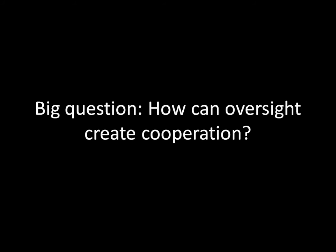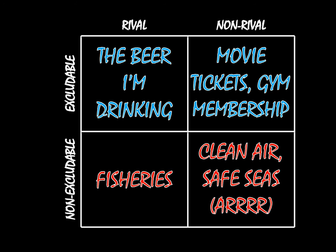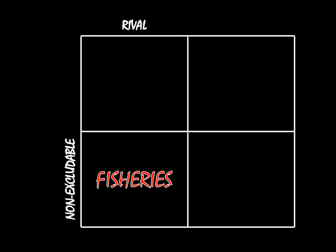Last time we did a whole bunch of things. We talked about what rival goods are and what excludable goods are, and based off of those descriptions, we have four different types of goods in total. We gave examples for all of those, and we talked about how non-excludable goods, like common pool goods such as fisheries, and public goods such as clean air, can be underprovided for. Now in this lecture specifically, we're going to be focusing on common pool goods, and we're going to talk about how monitoring institutions can ensure that common pool goods aren't exploited.